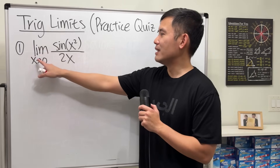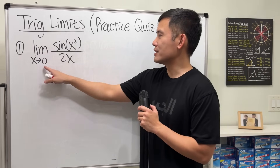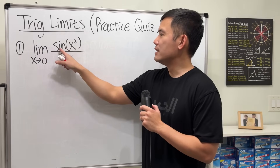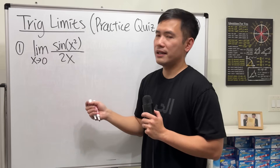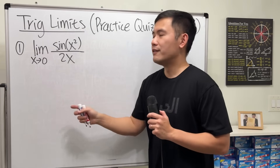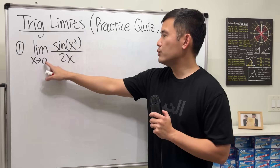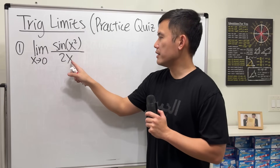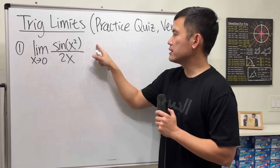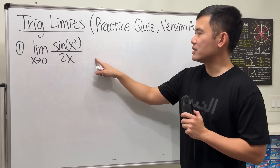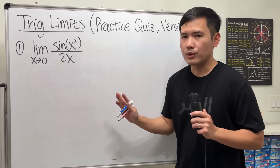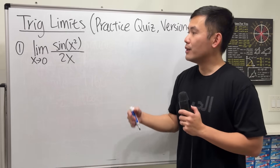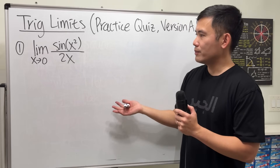First one: we have the limit as x approaching 0 of sine of x squared over 2x. If you put 0 into the x here and here, you get 0 over 0 — cannot draw any conclusion.